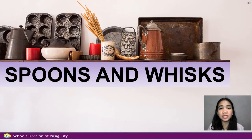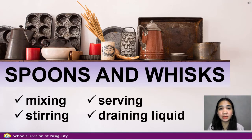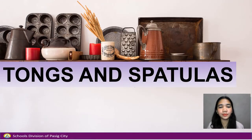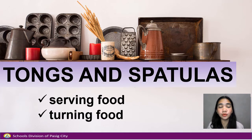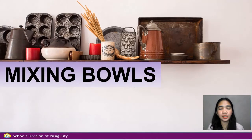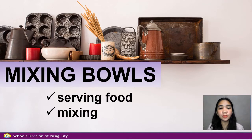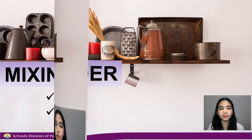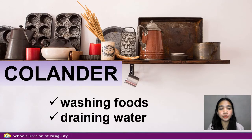Spoons and whisk are used for mixing, stirring, serving, and draining liquid. Tongs and spatulas are used for serving food or turning food. Colanders are used for washing foods and draining water.